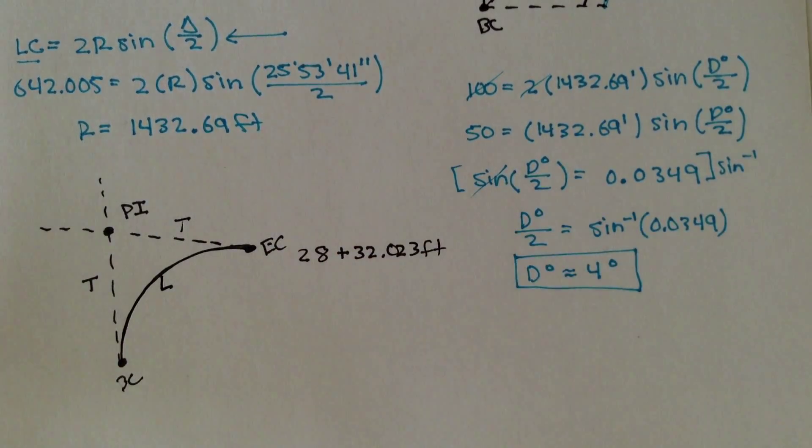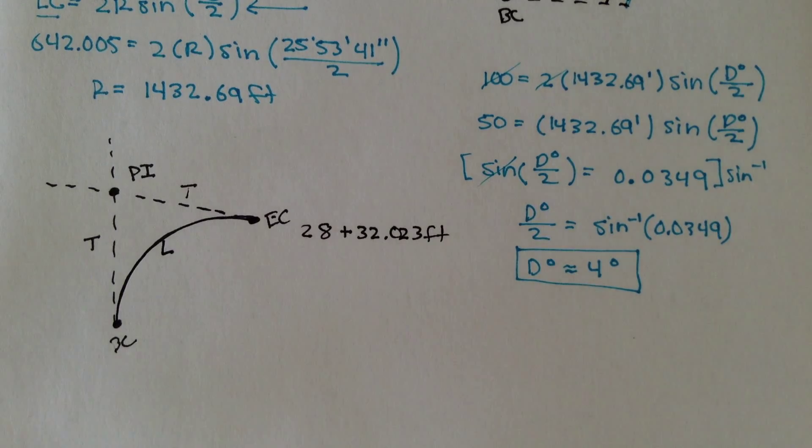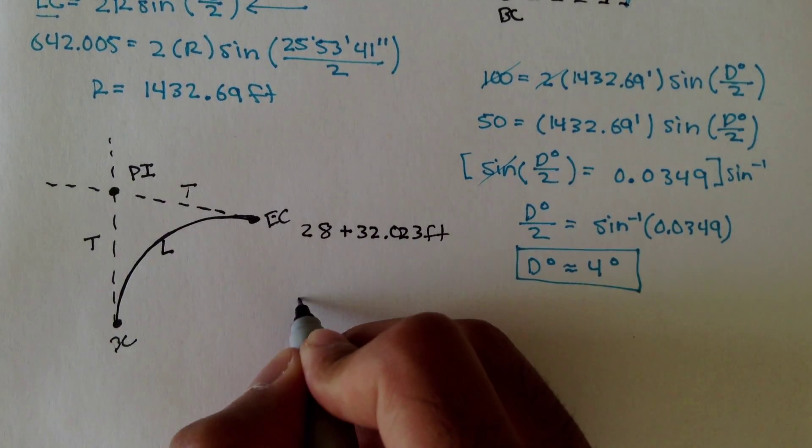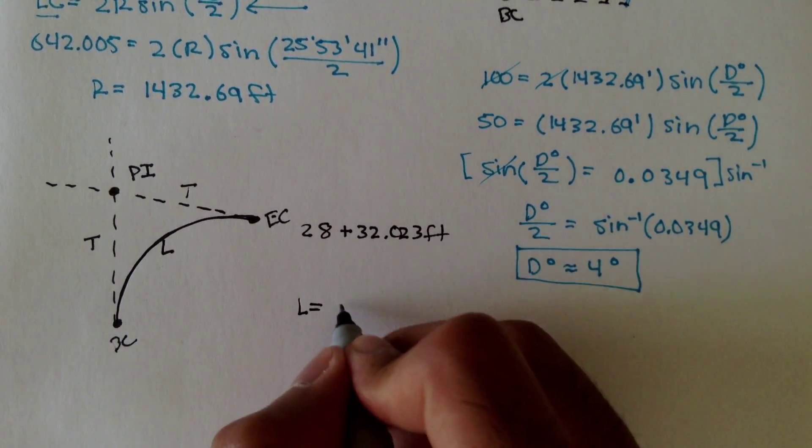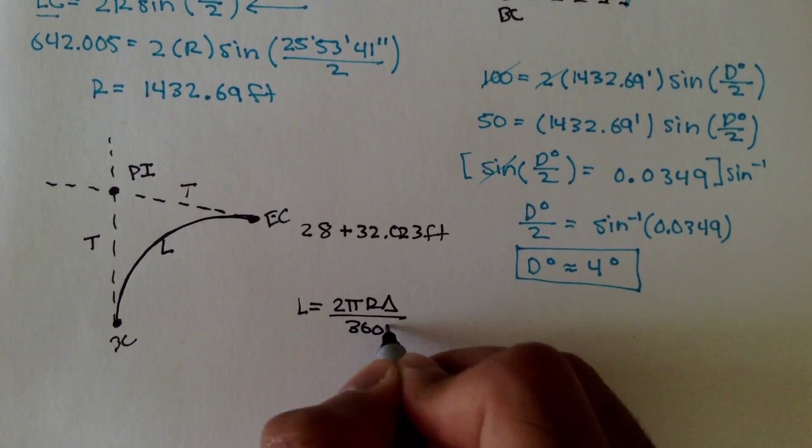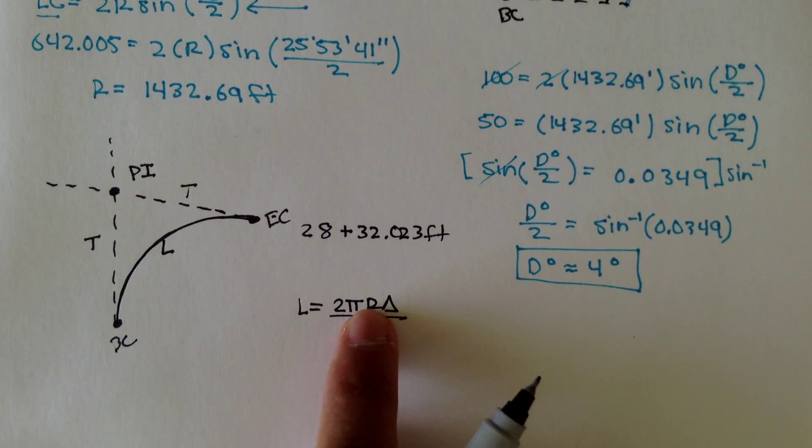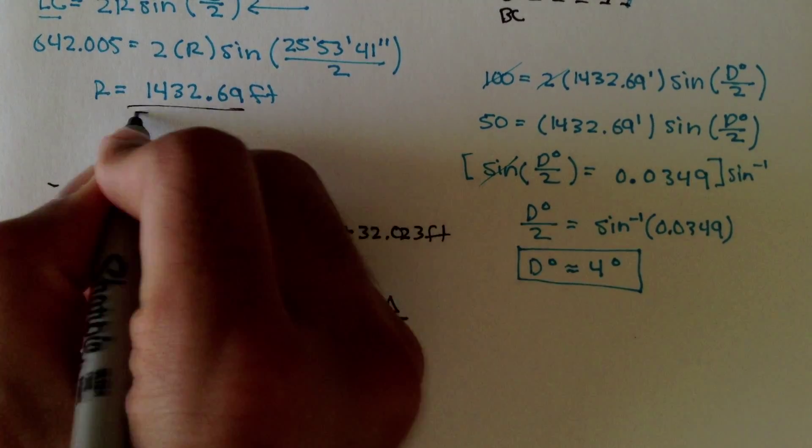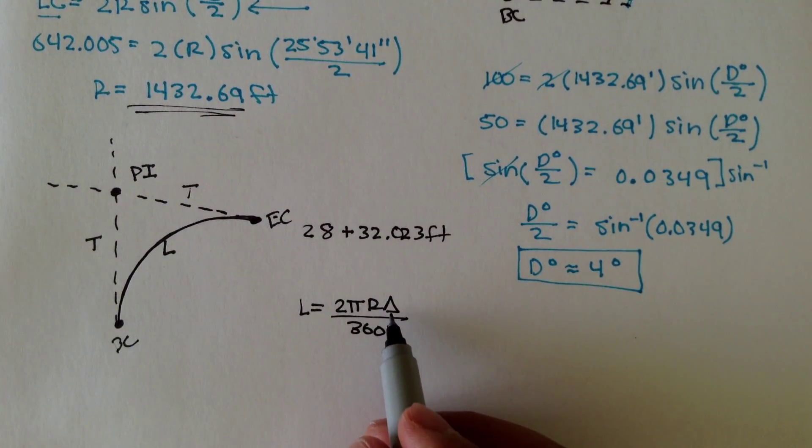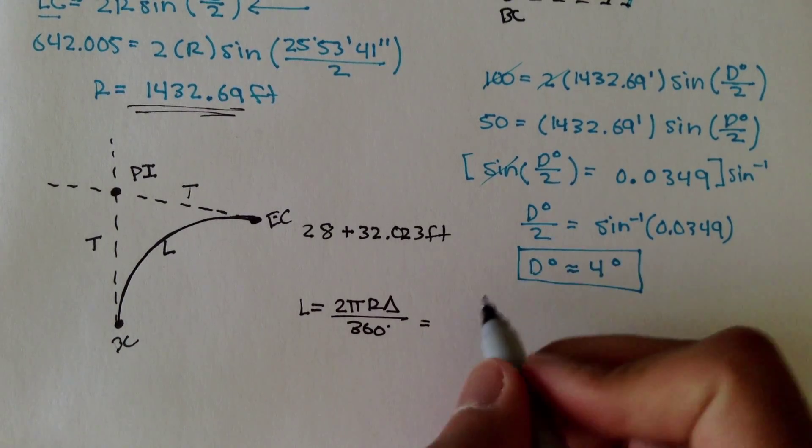This is the length L, and we don't know what L is, but we do have a formula for that. Length is equal to 2πR delta over 360. We know what the radius is, we figured it out in the last video, and we know what the interior angle is, so we can plug in those two values to get L.